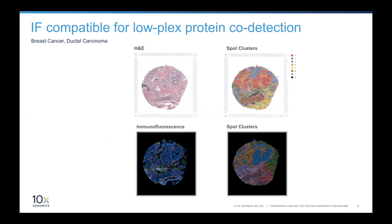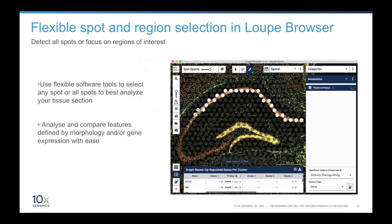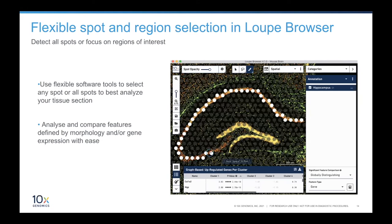We will also release FFPE Visium with compatibility for immunofluorescent staining rather than H&E, allowing low-plex protein co-detection — adding a little multiomics to the assay. You'll interact with the data in exactly the same way in the Loupe Browser, navigating by regions of interest and genes of interest. From an experiment you have thousands of individual gene expression patterns which you can select, combine, and return to at will. The full power of Visium remains intact for FFPE.